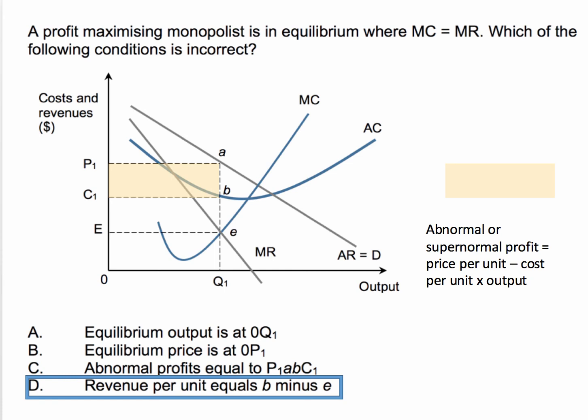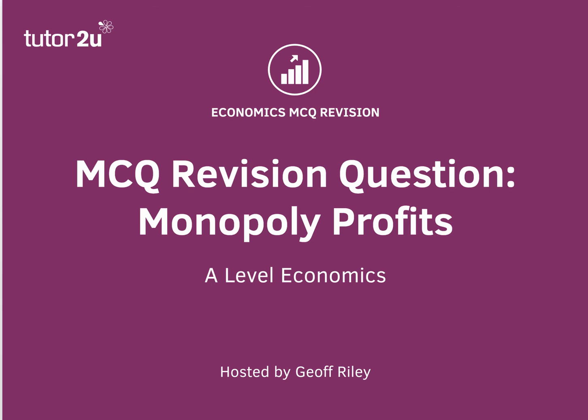Well clearly D must be the right answer. The revenue per unit is of course the price — the revenue per unit is P1, which equals A. B minus C is essentially the average cost minus whatever — it's irrelevant, it's just clearly incorrect. So the right answer is D.